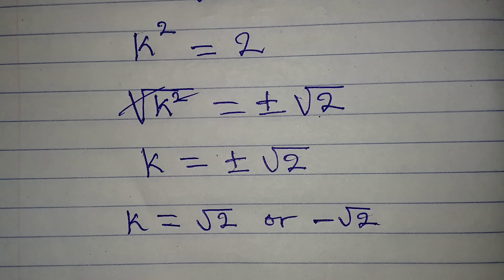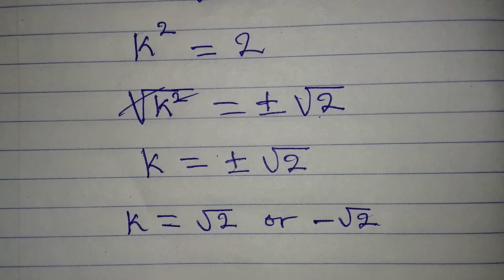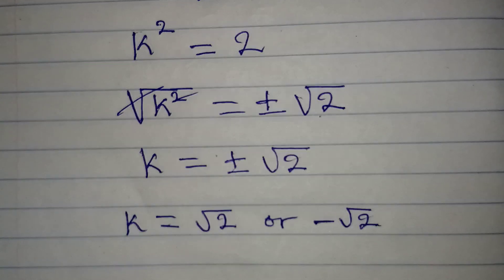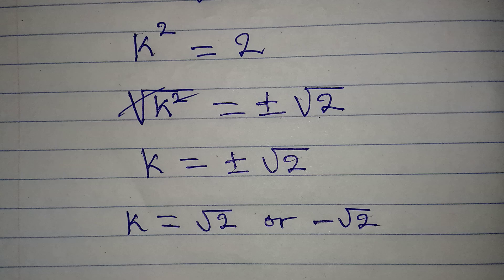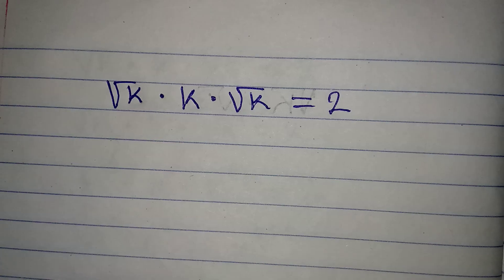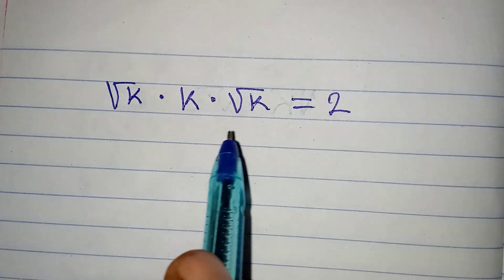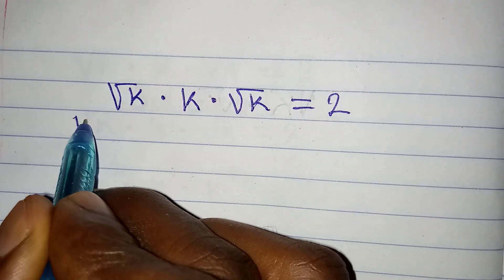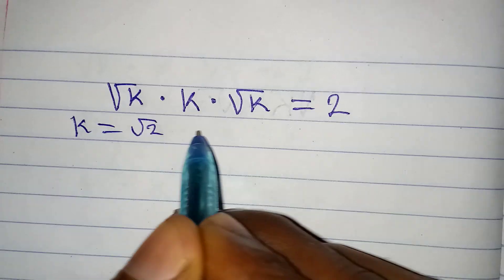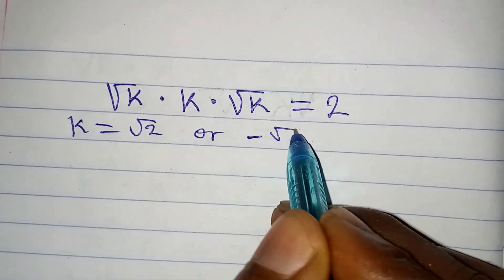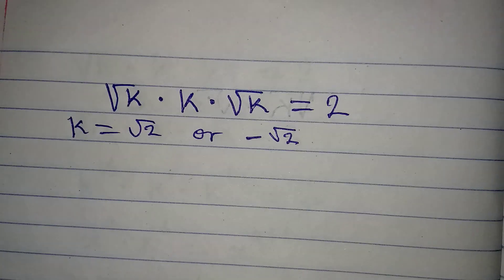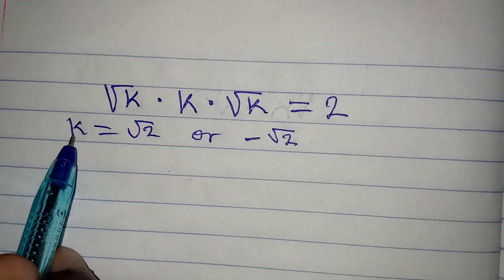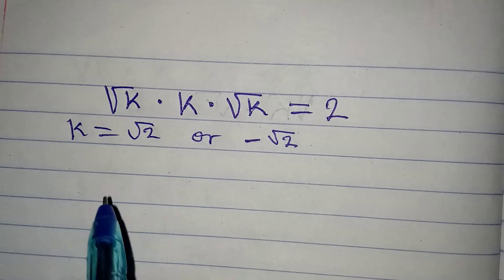Now, are we sure that these two solutions satisfy the given equation? Let's go back to the given equation. We got k equal to root 2 or negative root 2. Let me start by substituting k equal to root 2.